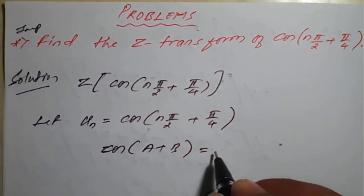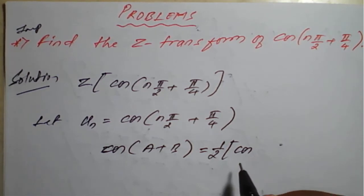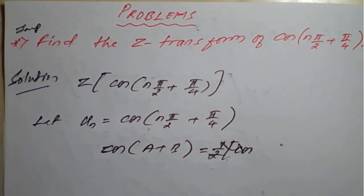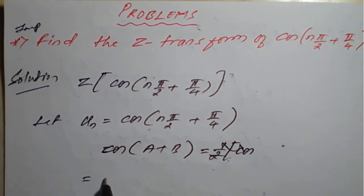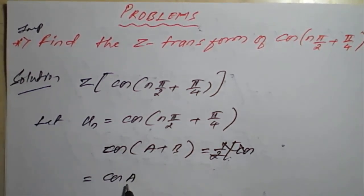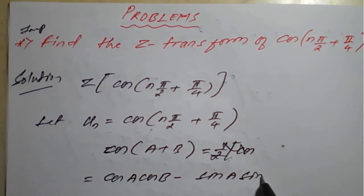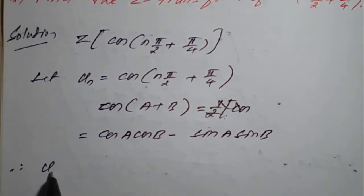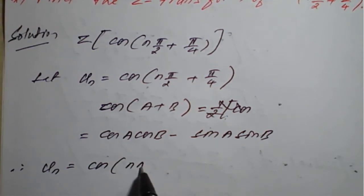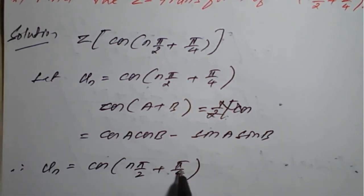cos(a + b) is nothing but cos(a)cos(b) − sin(a)sin(b). We need to apply this formula first, then we can go for the Z transform. Here, a = nπ/2 and b = π/4.